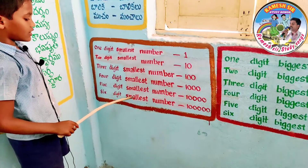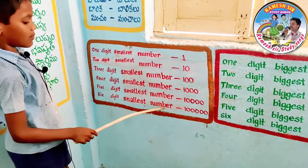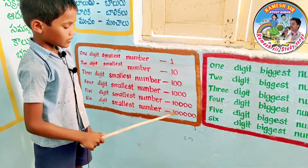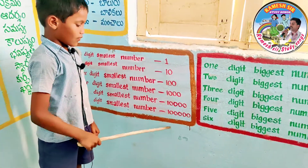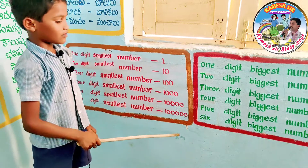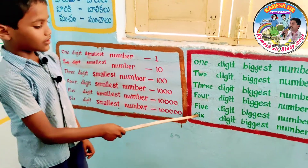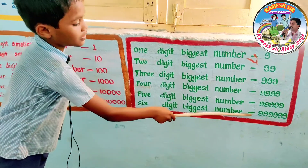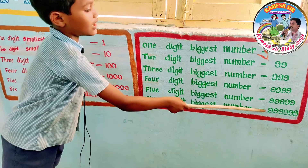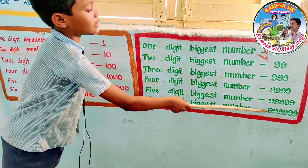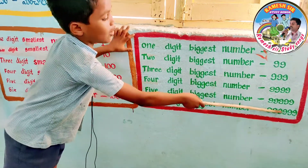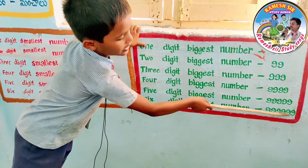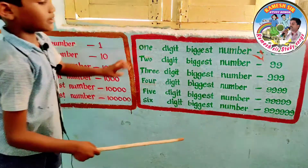Six digits smallest number: one lakh. Six digits biggest number: nine lakh, ninety-nine thousand, nine hundred and ninety-nine.